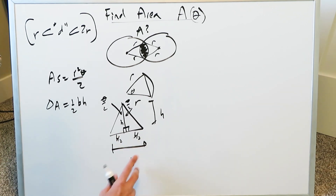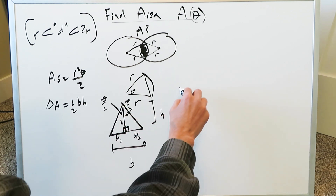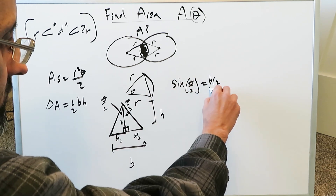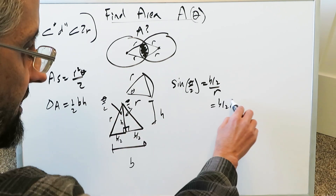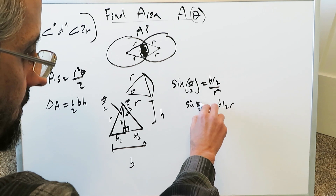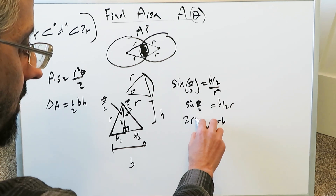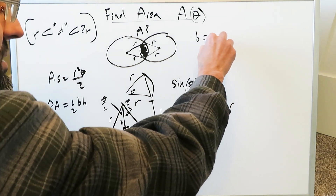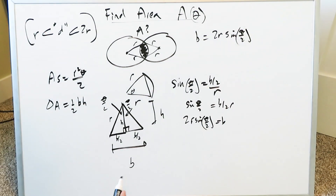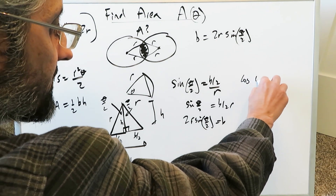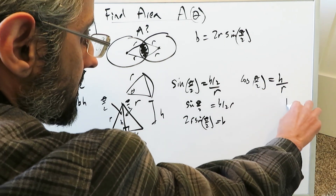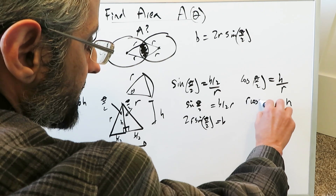To find the dimension of the base, consider the right triangle. Sine of theta over 2 equals the opposite side, which is b over 2, over the hypotenuse, which is r the radius. So b over 2r equals sine of theta over 2, and therefore the base b equals 2r sine of theta over 2. Now find the height using cosine of theta over 2, which equals the adjacent side — the height h — over r. So h equals r cosine of theta over 2.